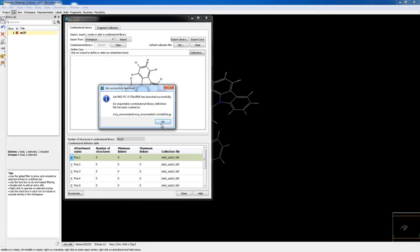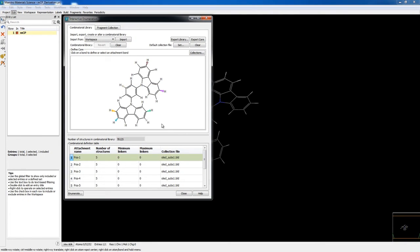For combinatorial libraries with 10 to a thousand structures, the job may take a few minutes, and much longer for larger libraries. In practice, the ms combi engine is capable of generating virtual libraries containing up to millions of compounds.